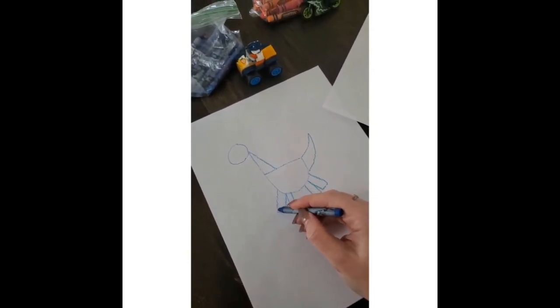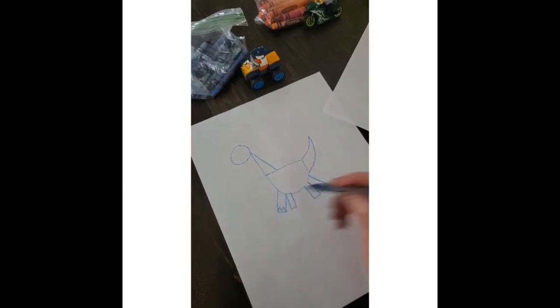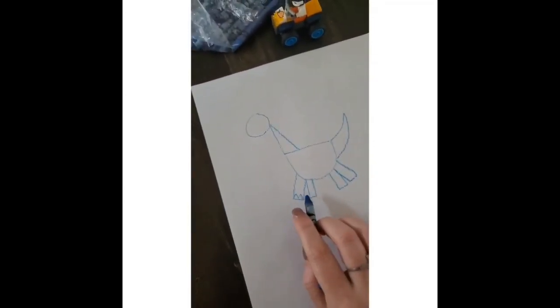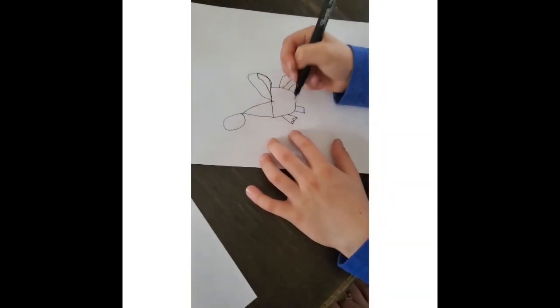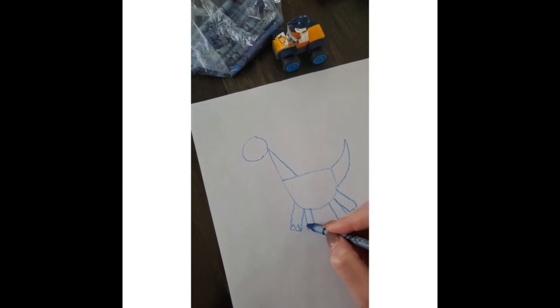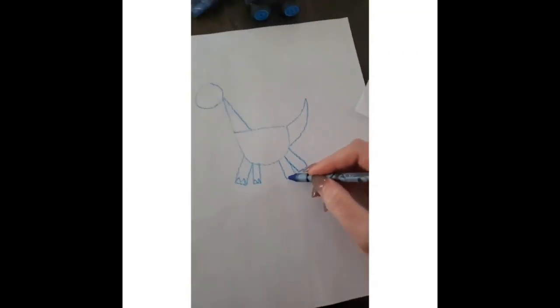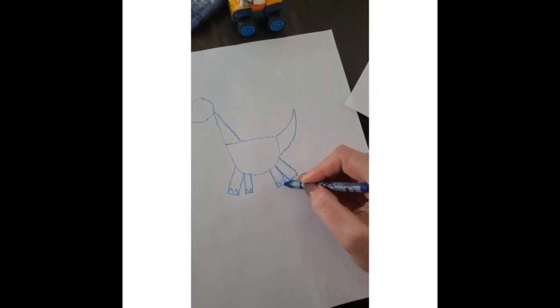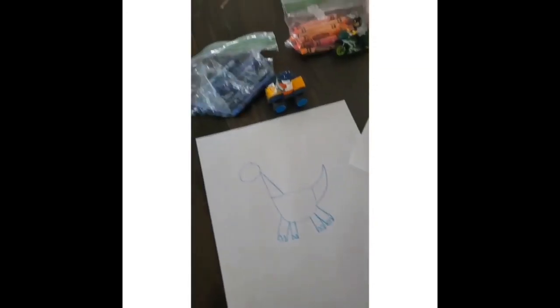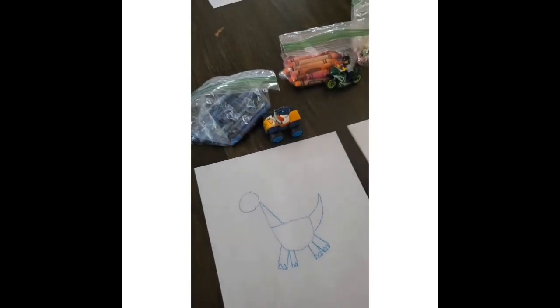Now we're going to draw the little feet. You want to draw some claws, so we're going to draw two little triangles in there. So those will be the claws. You can go ahead and do that—just two little triangles on each little foot.